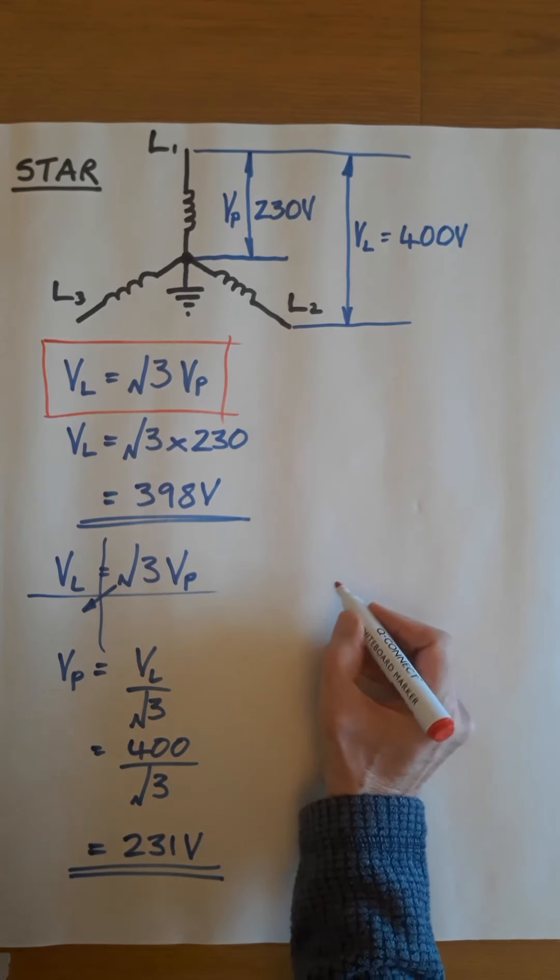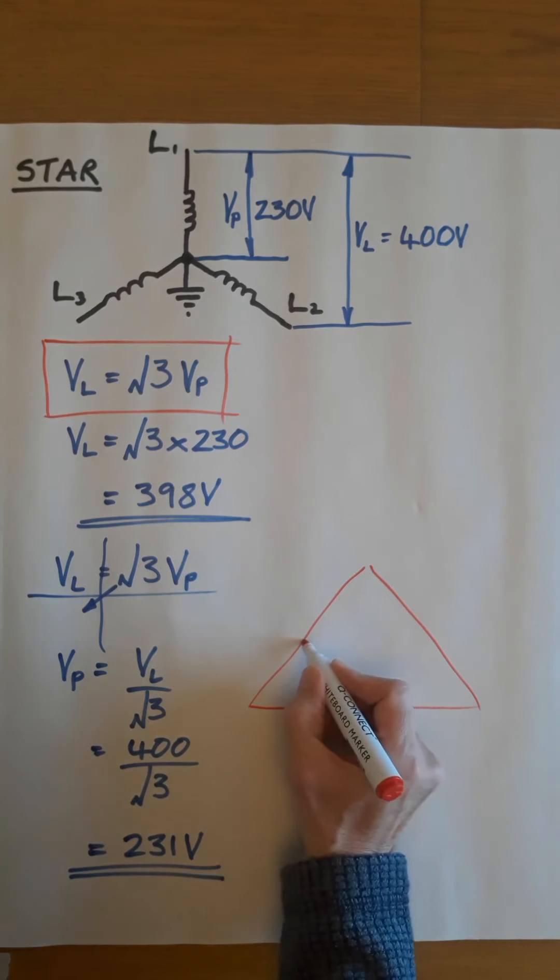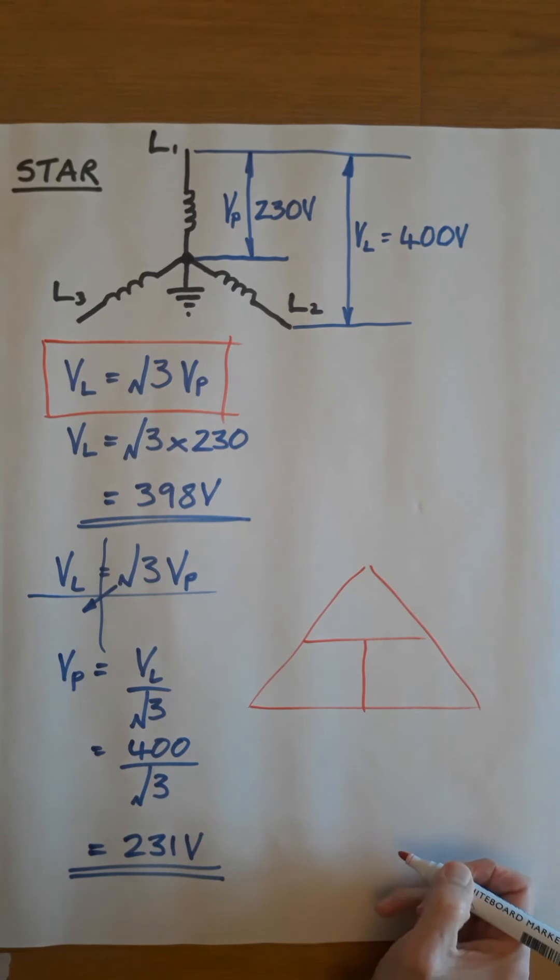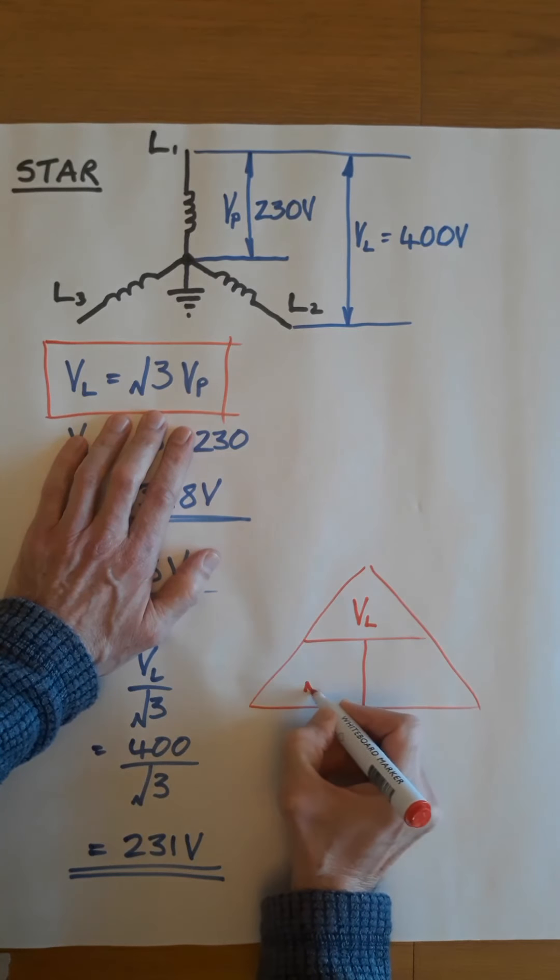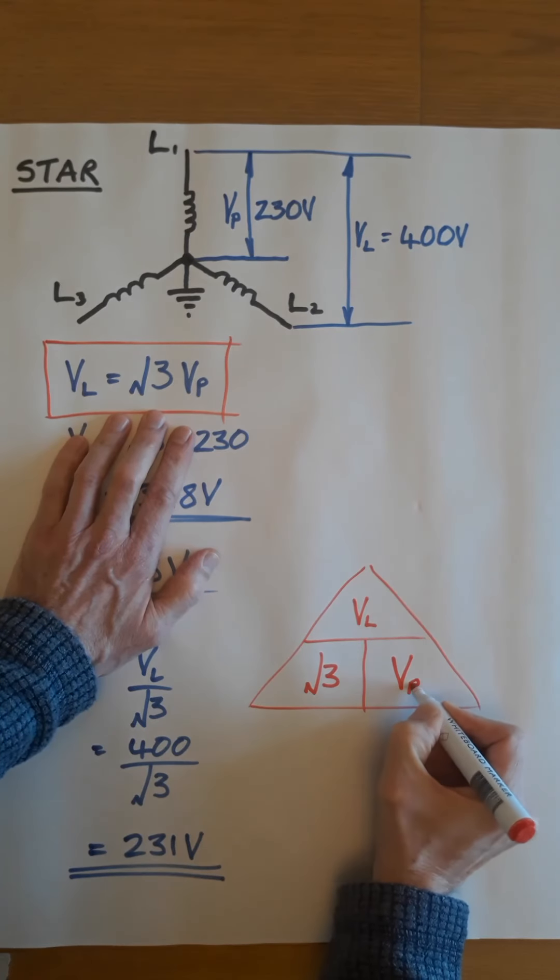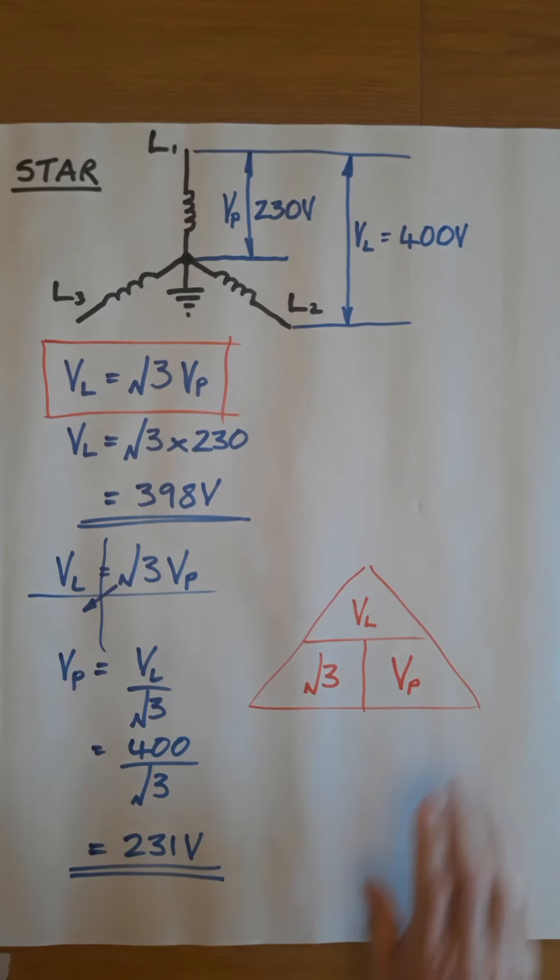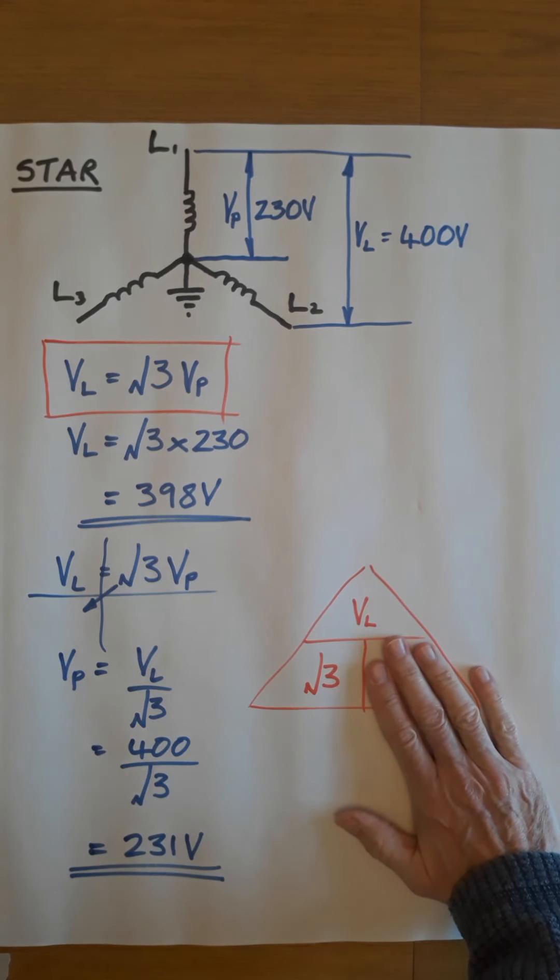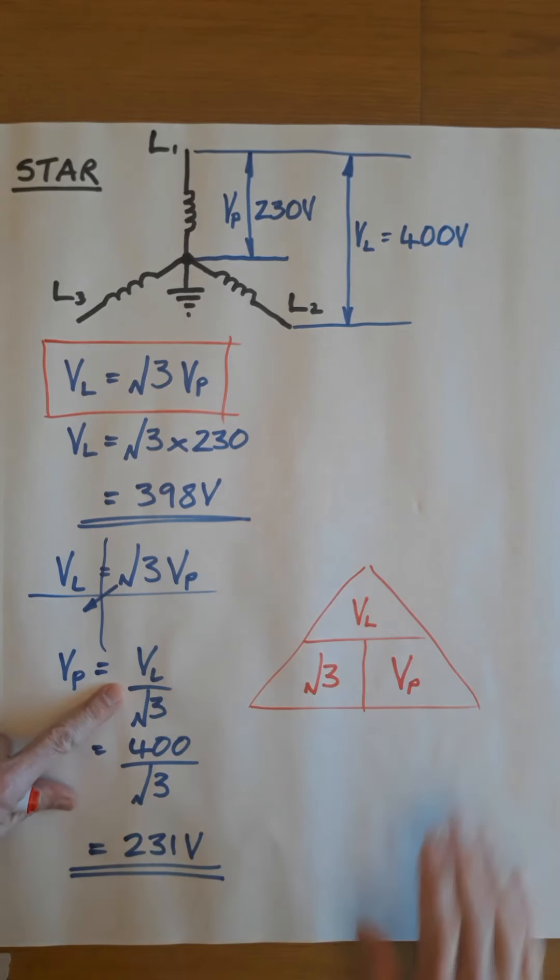So here's your formula: VL, root 3, VP. And again, if you went through this transposition, if you wanted to find VP, cover it up and your formula for VP is VL on top of root 3, which is where we worked there.